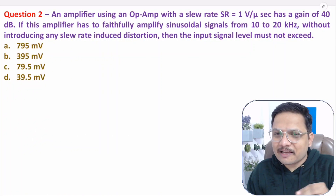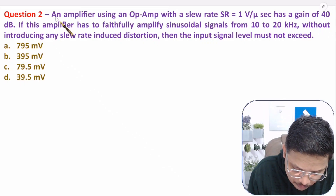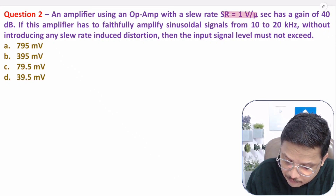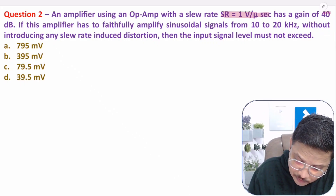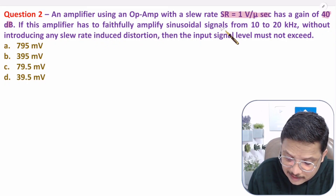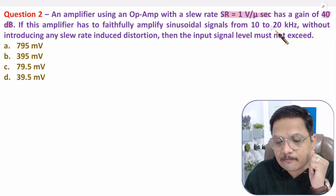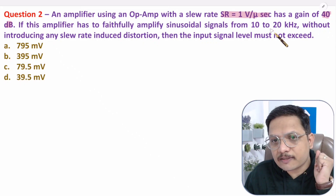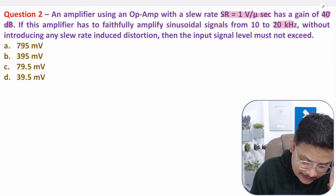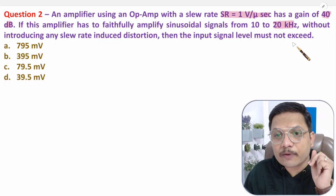The second question is based on slew rate. An amplifier using an op-amp with a slew rate of 1 volt per microsecond has a gain of 40 dB. This amplifier has to faithfully amplify sinusoidal signals from 10 to 20 kilohertz. For slew rate, we focus on maximum frequency only, since the issue occurs at maximum frequency — which is 20 kHz. Without introducing slew-rate-induced distortion, what should be the highest magnitude of the input signal?